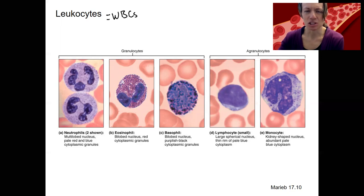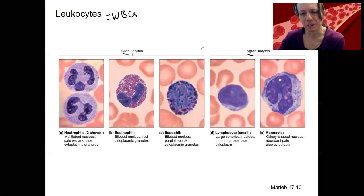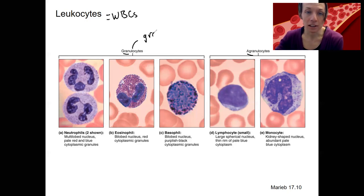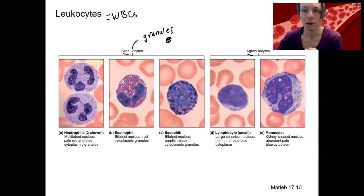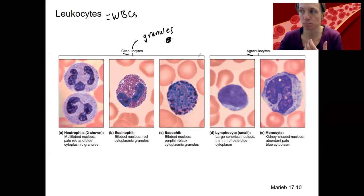The first way to categorize leukocytes is just by an appearance thing: granulocytes and agranulocytes — ones where there are visible granules and ones where there are not visible granules. It's not actually much meaning beyond that, and in agranulocytes there are some granules, they're just too small to see. The granules are little sacks inside the cell that contain enzymes to break down invaders and other stuff that particular cell needs. That's why all of these cells have some granules to some extent — some are just bigger and more obvious.